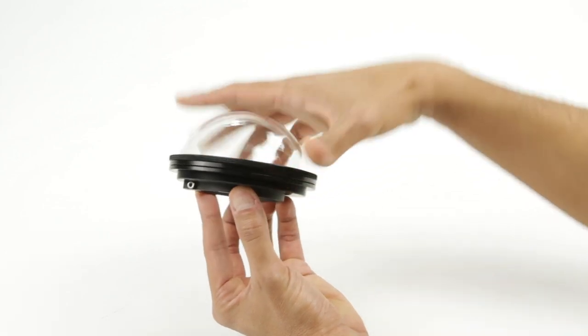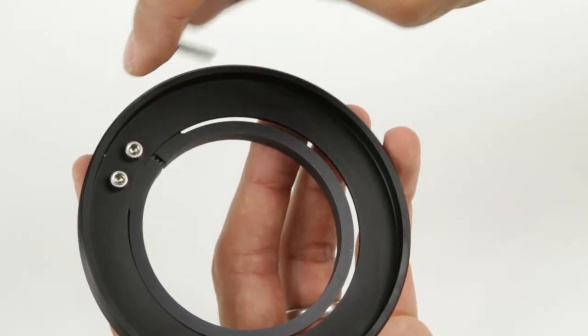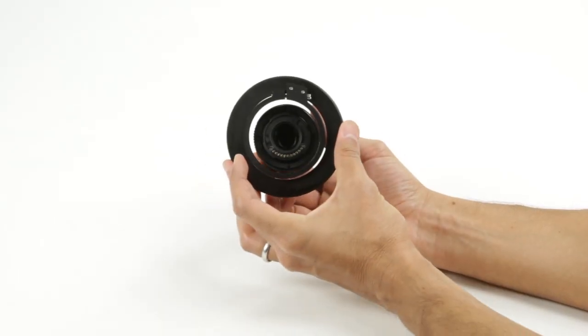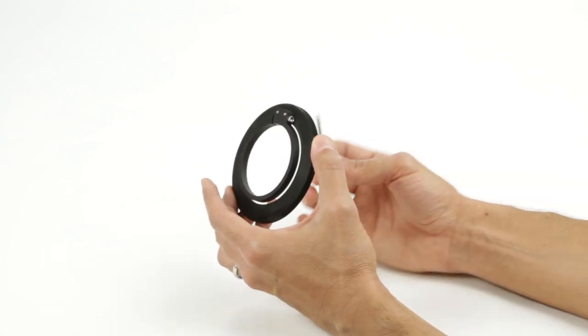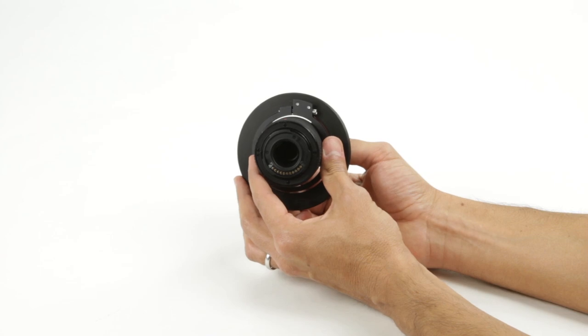If the bracket is not already attached to your adapter, use the provided Allen wrench to connect them. Insert the lens through the adapter, with the bracket side facing forward or out. Use the Allen wrench to tighten the bracket around the lens's body. Make sure it's flush against the front edge, but without impeding the lens's line of view.